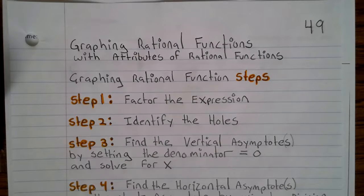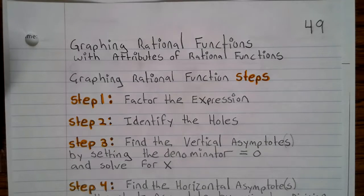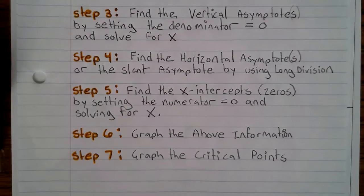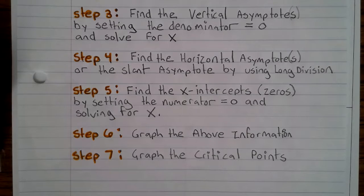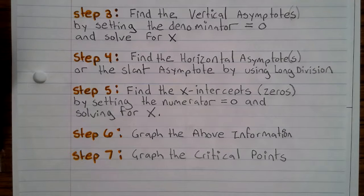Step 3: Find the vertical asymptote or asymptotes by setting the denominator equal to 0 and solve for x. Step 4: Find the horizontal asymptote or asymptotes or the slant asymptote by using long division. Step 5: Find the x-intercepts or zeros by setting the numerator equal to 0 and solving for x.